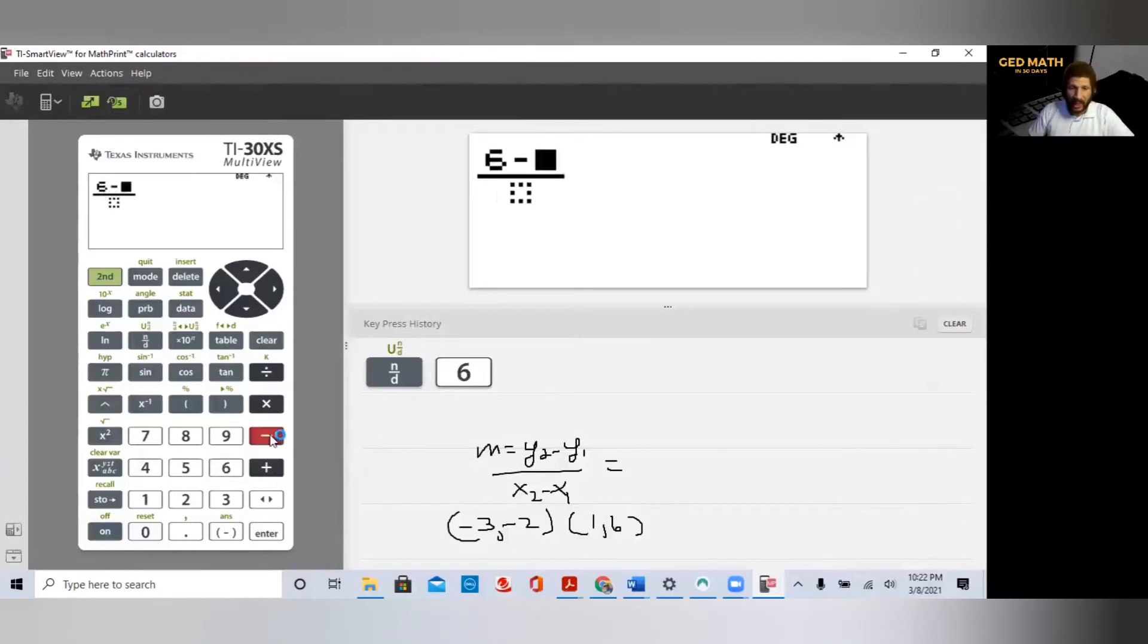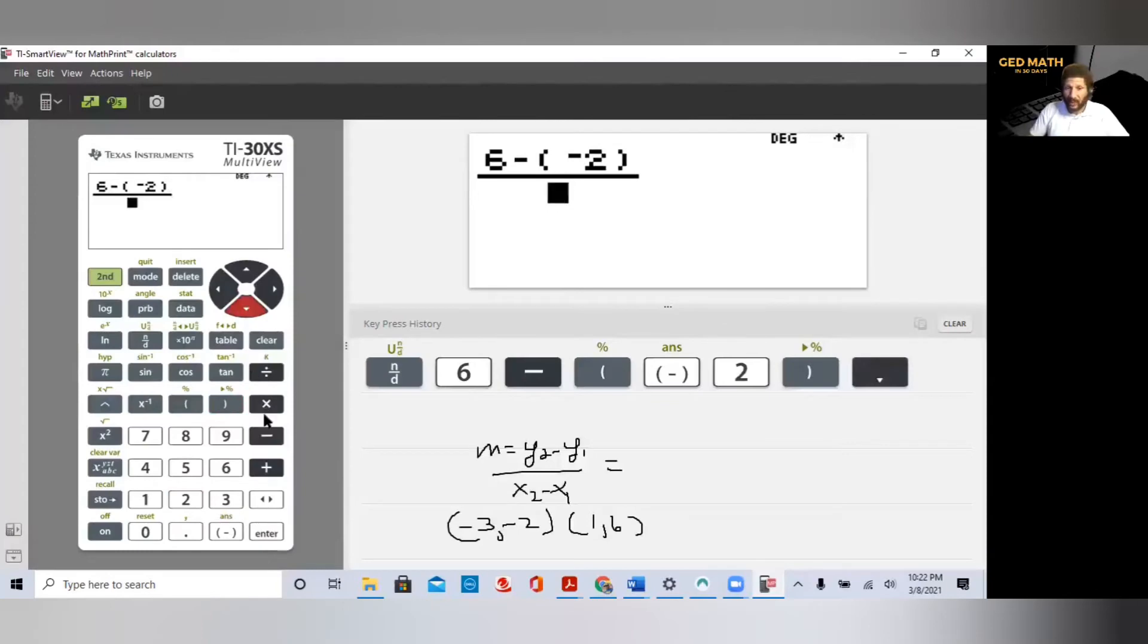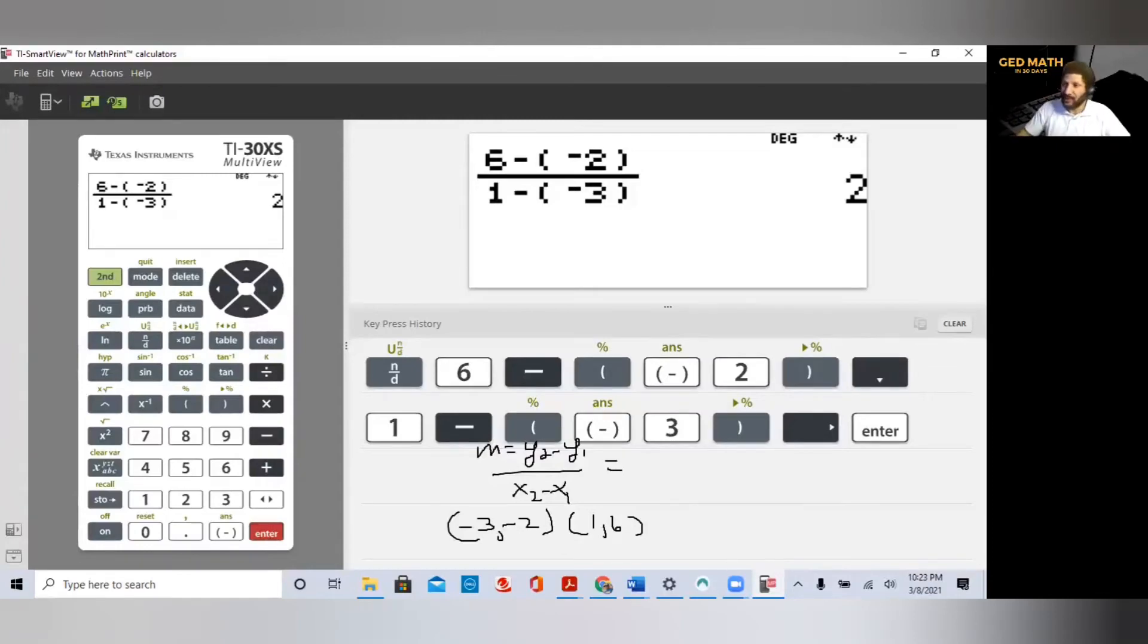Y2 is 6. We're going to hit the subtraction sign. That's for the subtraction in the formula. Now, Y1 is minus 2. So in parentheses, we're going to use the negative next to enter to put that minus 2 in. We're going to do the same thing on the bottom. X2 is 1. We're going to use subtraction sign because that's from the formula. And then minus 3, we use the negative sign next to enter. Hit our right arrow. We don't have to do anything. It does it for us. So our slope is 2.